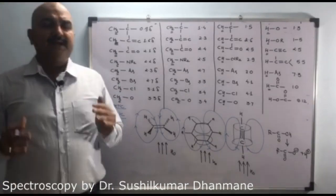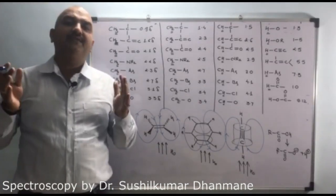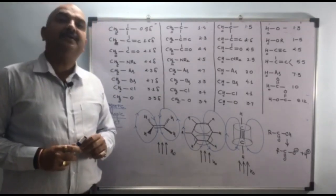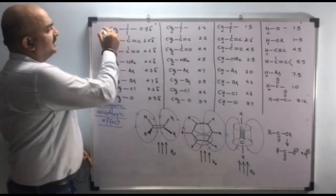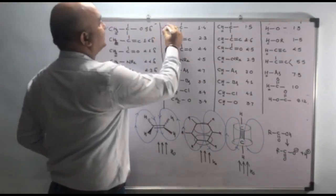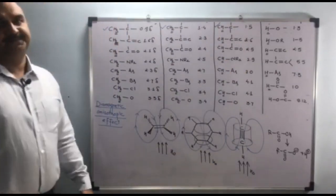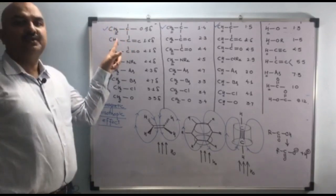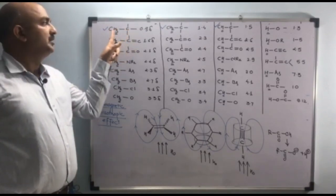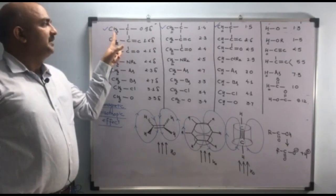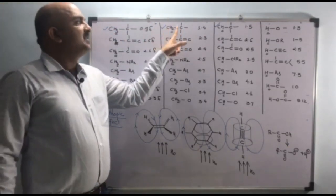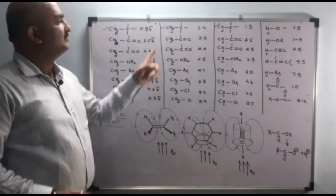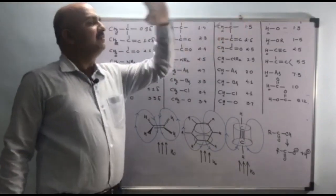First of all, by taking advantage of our structural knowledge, let's have a review on the value of chemical shift. This is methyl proton, this is methylene proton, and this is methane proton. Methyl proton is one time attached to carbon and three times to hydrogen. Carbon is more electronegative than hydrogen. Methylene is attached to two carbons — more deshielding. Three carbons gives still more deshielding.